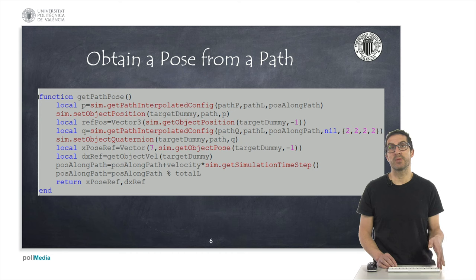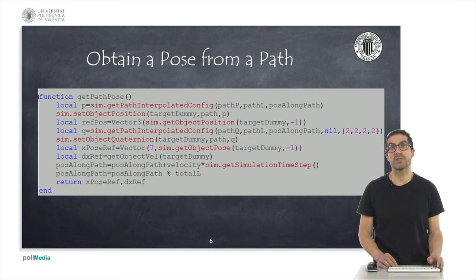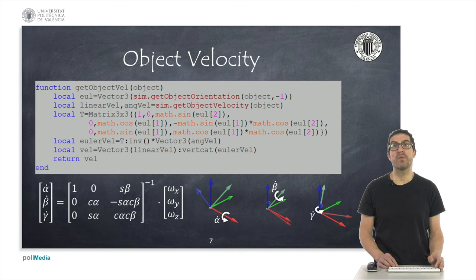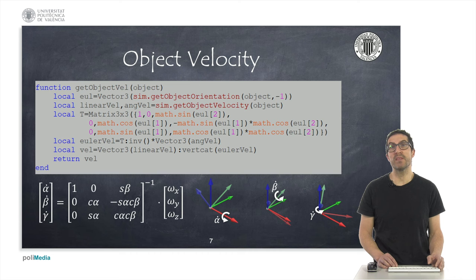That will be our return output argument — a vector with seven elements, three corresponding to the position and four corresponding to the orientation expressed in quaternions. On the other hand, it also obtains the linear and angular velocities of the target dummy by calling the function getObjectVel. This function returns a vector with the linear and angular velocities — actually it returns the variation of the Euler angle velocities over time for a given object handle. This function is useful for computing the feedforward term of the kinematic controller. It obtains the linear velocity and the angular velocity.